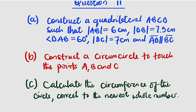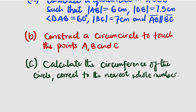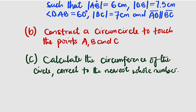Then part B: construct a circumcircle to touch the points A, B, and C. A circumcircle is a circle that touches the vertices of a figure. Then lastly, calculate the circumference of the circle to the nearest whole number.